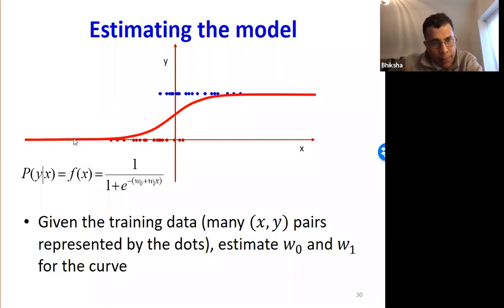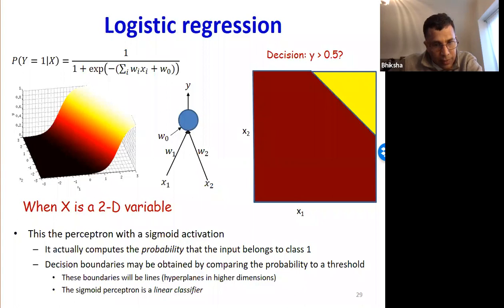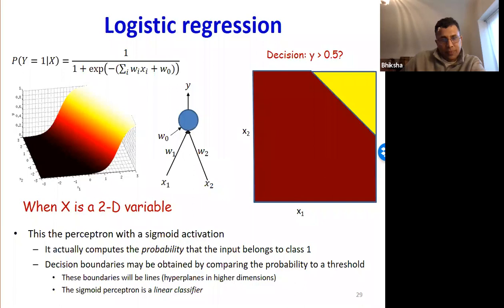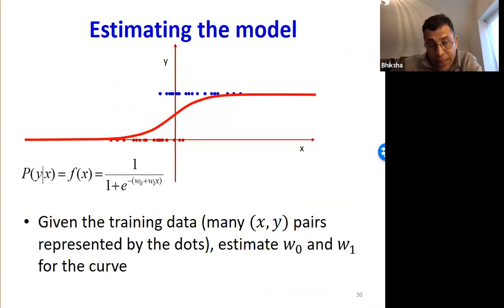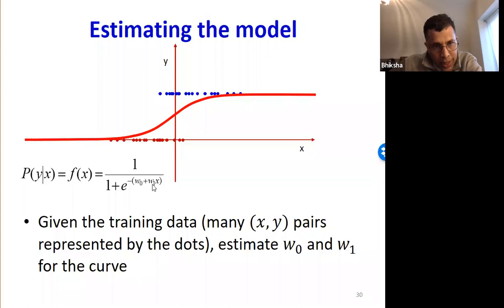When we train the model, we're given many training instances of x, y pairs — the input x and the target output label — and our job is to learn the weights and the biases. We want to learn these parameters such that the logistic function gives us the best estimate of the a posteriori probability of y given x. We want to learn w0 and w1 that gives us the best guess for P(y|x).